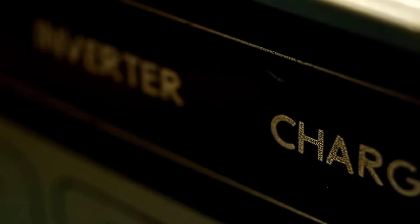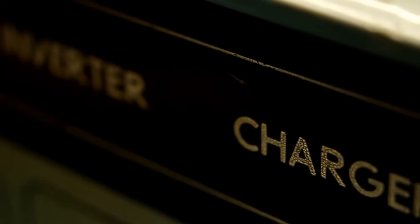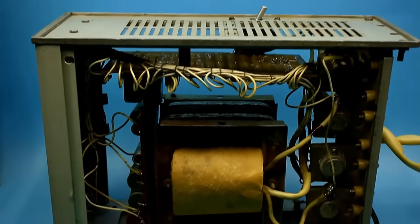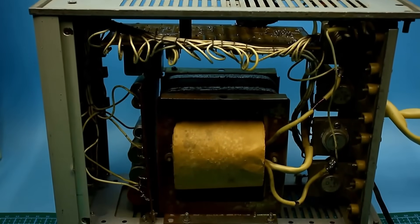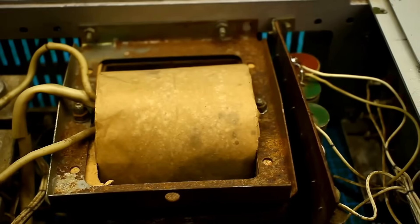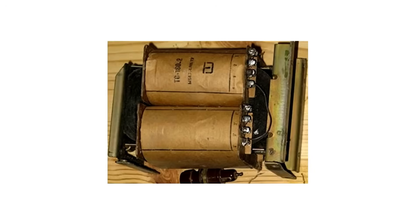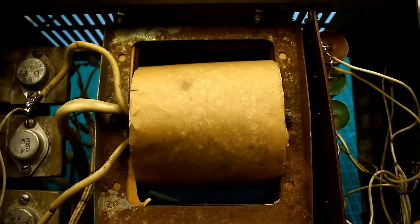We're done with the external overview, now let's see what's inside. And inside, everything is ingenious and simple. A huge iron transformer, consisting of four U-shaped cores. In terms of size and power, it is comparable to two TS-180 type transformers.